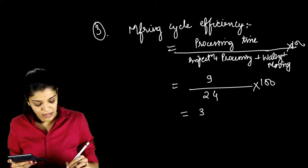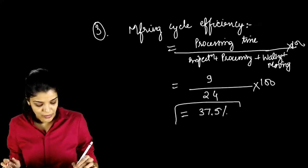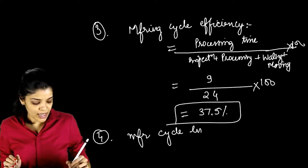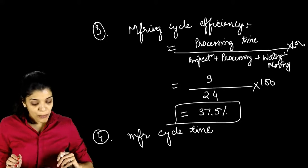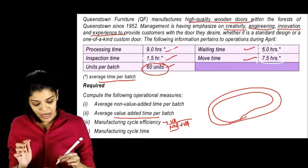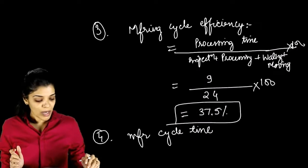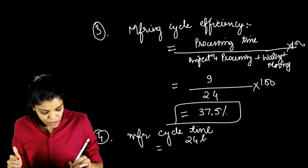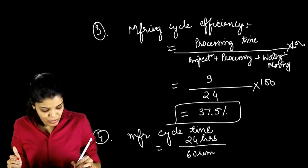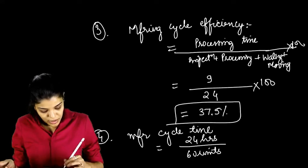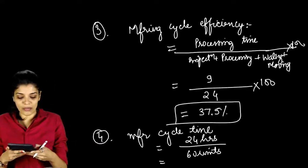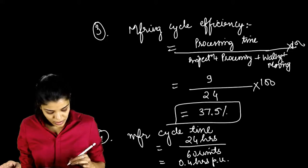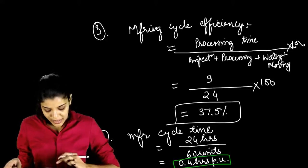Fourth, manufacturing cycle time per unit: total time is 24 hours and there are 60 units per batch, so 24 divided by 60 equals 0.4 hours per unit.